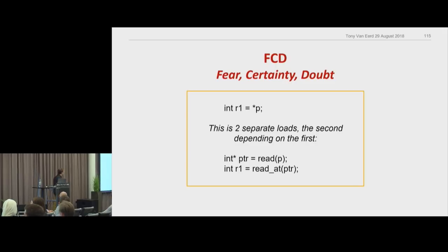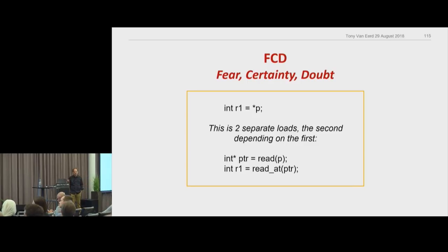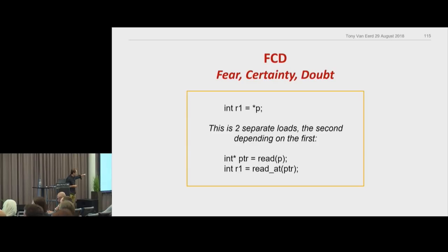Here's one of my favorite examples: that line of code that reads the value a pointer is pointing to — that's two separate reads of memory. First you read the value of P to know where it's pointing, then you read the value that P is pointing to. Two separate operations.